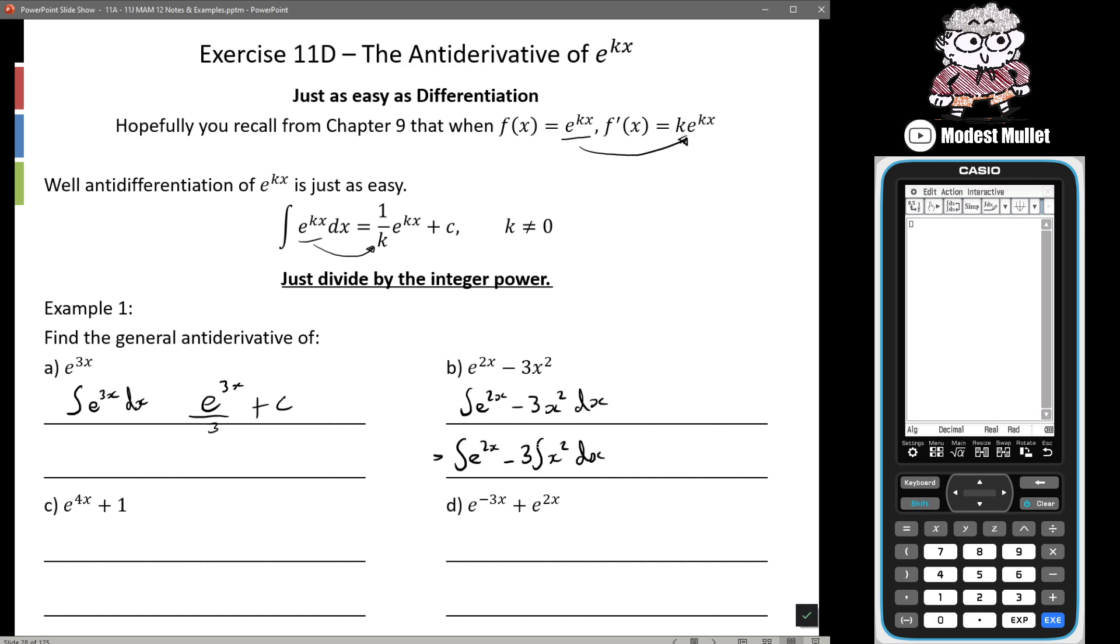We're just bringing that 3 out because we could take it as a scaling factor and I'm just showing all the steps. You wouldn't be expected to write all of these down, I'm just trying to be clear. So we're going to get half e to the 2x minus 3x to the power of 3 on 3.